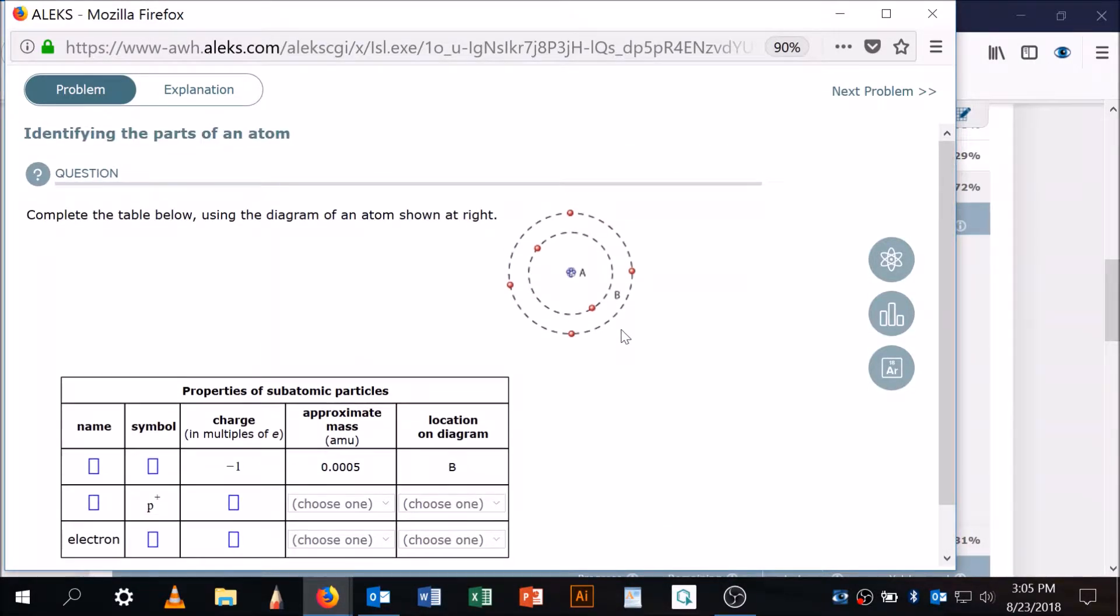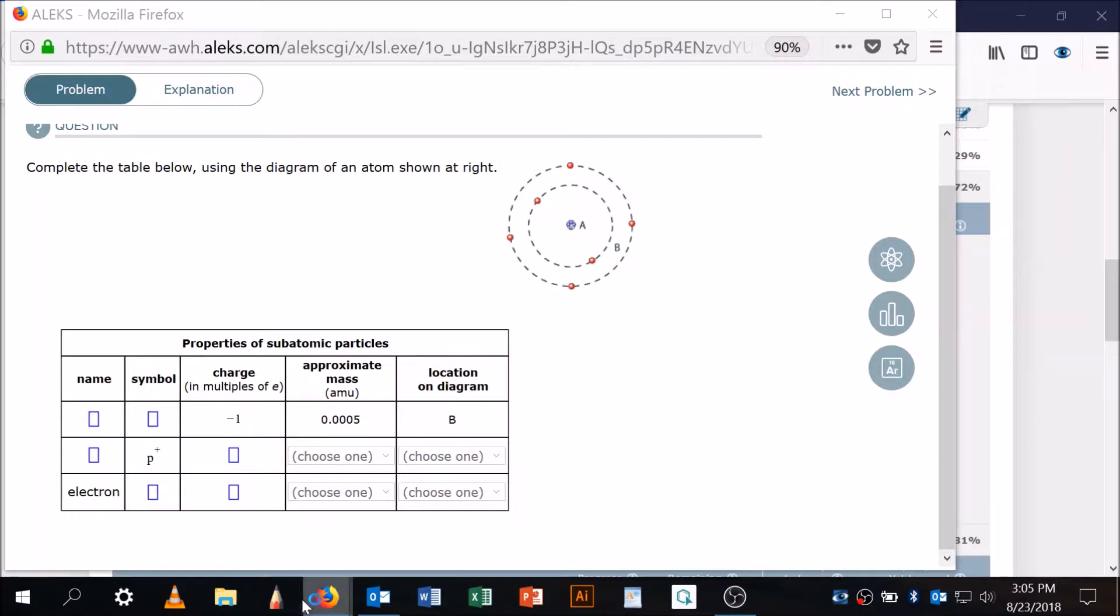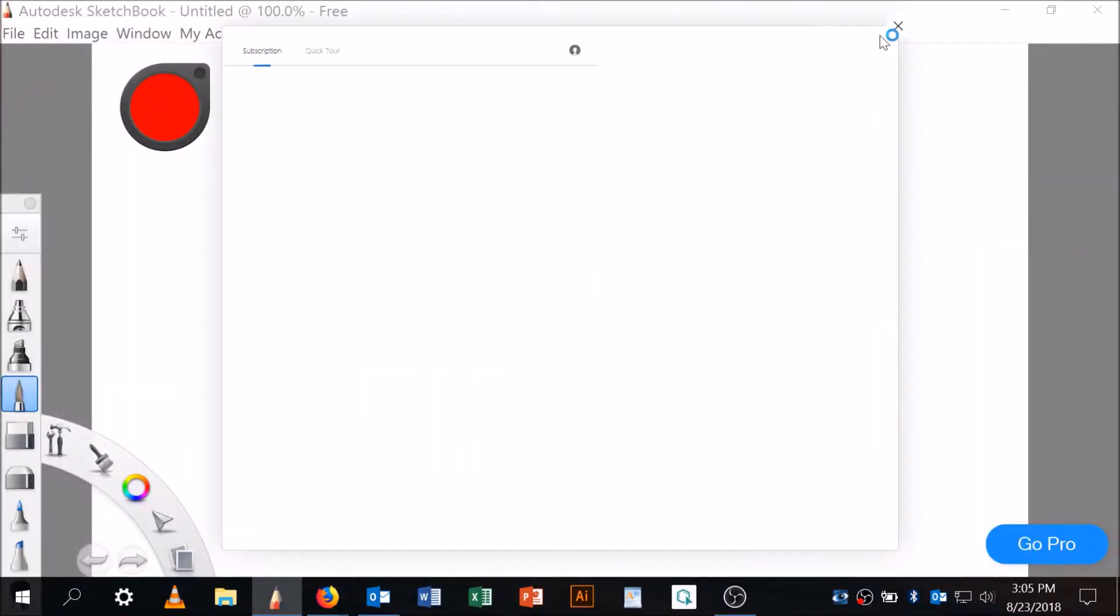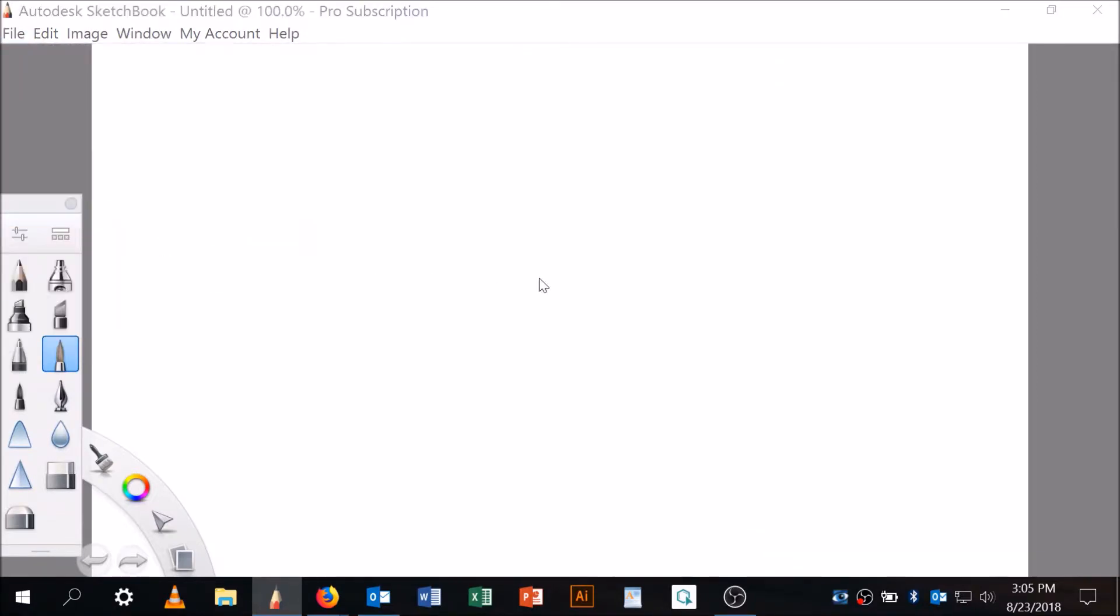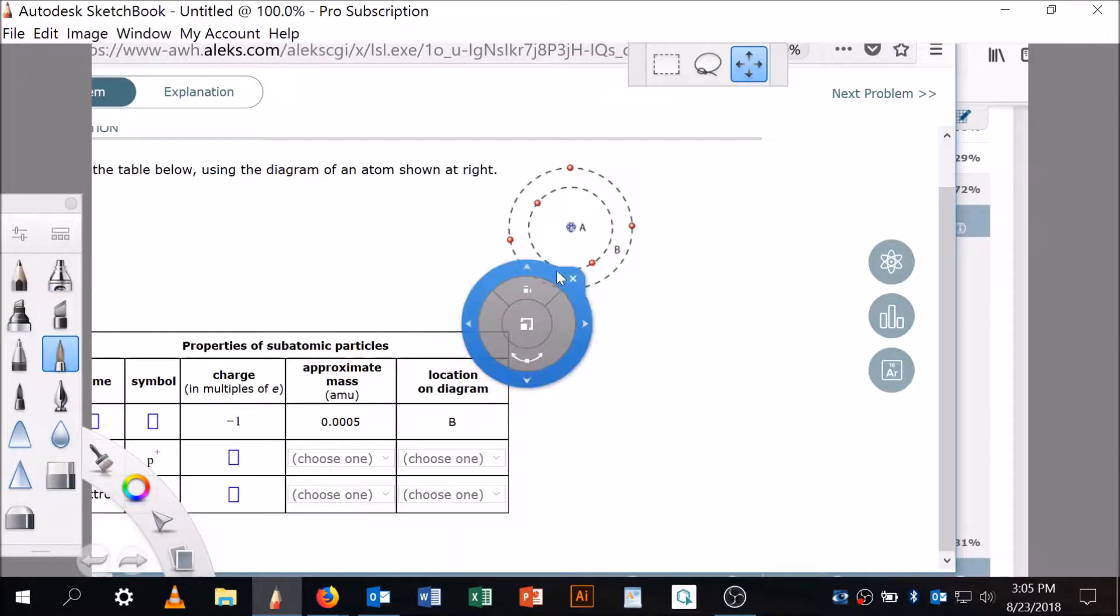I'm going to do a screenshot. Boom. Open up my whiteboard. And I'm going to come here. File, add image, and I'll go here. Okay, so here we go.